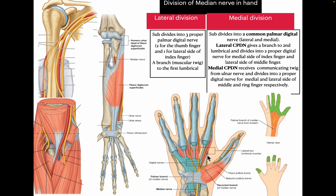The middle division divides into two common palmar digital nerves: lateral and medial. The lateral common palmar digital nerve gives a branch to the second lumbrical and subdivides into two proper digital nerves for the medial side of the index finger and lateral side of the middle finger. The medial common palmar digital nerve receives a communicating twig from the ulnar nerve and divides into two proper palmar digital nerves for the medial and lateral sides of the middle and ring fingers respectively.